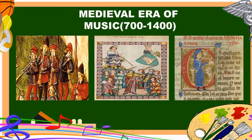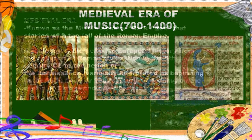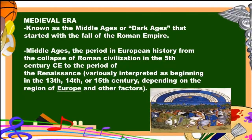Let's start with the medieval era of music, from 700 to 1400. The medieval era is known as the Middle Ages or Dark Ages, that started with the fall of the Roman Empire. It is the period in European history from the collapse of Roman civilization in the 5th century CE to the period of the Renaissance, variously interpreted as beginning in the 13th, 14th, or 15th century, depending on the region of Europe and other factors.